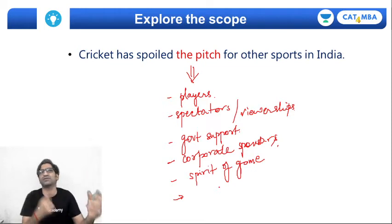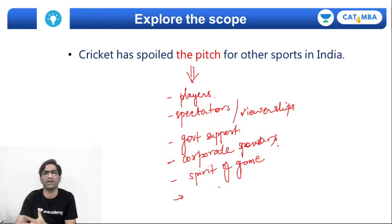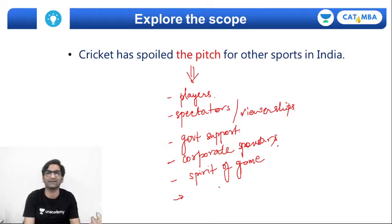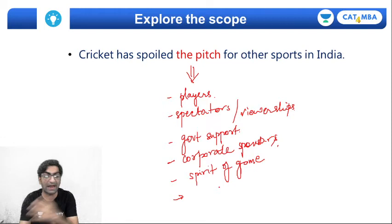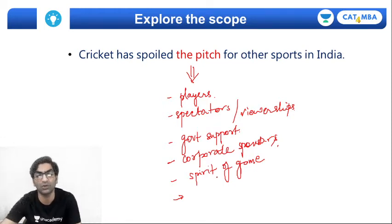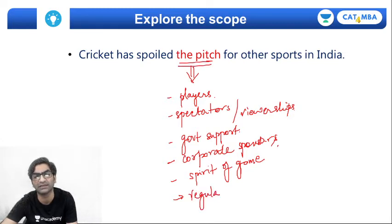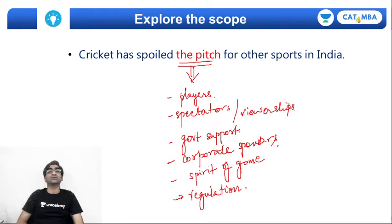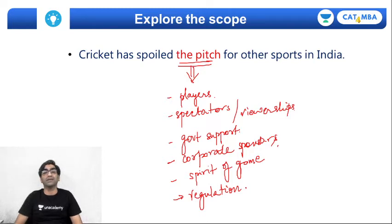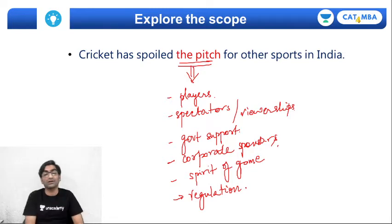Can you see that the moment you start imagining and classifying what 'pitch' means, it gives you plenty of ideas? Maybe cricket has improved some things for other games, or maybe it has spoiled other things. The fact that so much government support goes to cricket sometimes rubs off on other sports too, because the government is inherently trying to balance the act. And by the way, 'spoiled the pitch' could also be about regulation — how is the game regulated, are there bodies that speak for players, for sports, for associations?